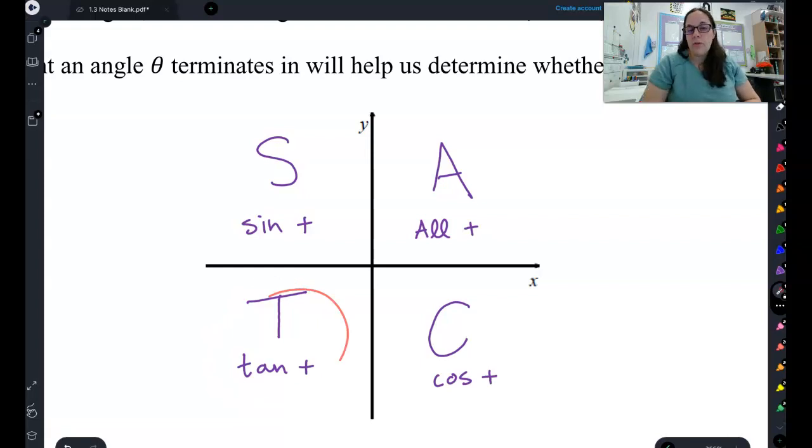In quadrant three, the tangent is positive. This should make sense because we know in quadrant three, both the x and the y are negative. So that means sine and cosine are both negative. So that would turn the tangent into positive.